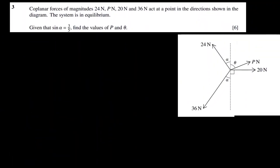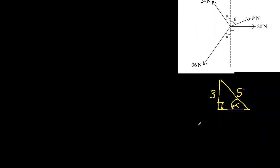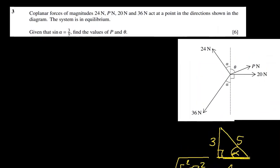Let's move on to the next one. There are coplanar forces of 24N, PN, 20N and 36N, and the directions have been given in this picture. Given that sine alpha is three-fifths, find the values of P and theta. Obviously sine alpha has been given, we will definitely need cos alpha as well. Let me draw a right angle triangle to find cos alpha. If sine is 3 over 5, then using Pythagorean theorem, the adjacent side is 4. So cos alpha is 4 over 5.